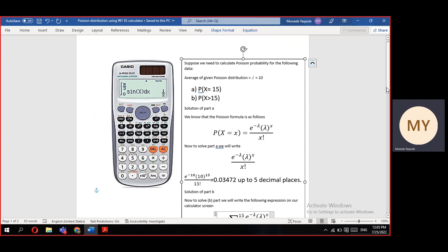Then multiply it with 10 power 15 and divide it by 15 factorial because x is 15 in part A. You will get a result of 0.03472 correct up to 5 decimal places.